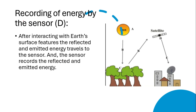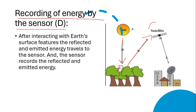The next step is recording of energy by the sensor. When this energy comes from the sun, interacts with earth's surface, and reflects back to the sensor, this energy is recorded in the sensor. The sensor can only record the reflected and emitted energy from the earth's surface.